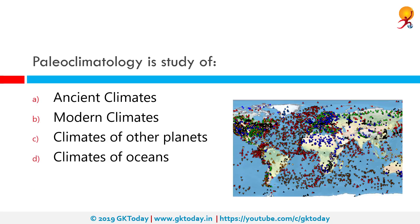Paleoclimatology is the study of what? Paleo is a word used for ancient, so the correct answer is ancient climates. Paleoclimatology is the study of past climates. Since it is not possible to go back in time to observe past climates, scientists use imprints created during past climates known as proxies to interpret paleoclimate. Organisms such as diatoms, forams, and corals serve as useful climate proxies.